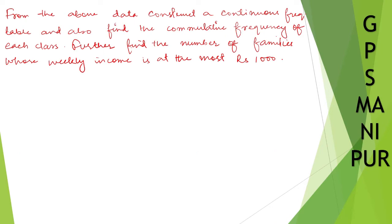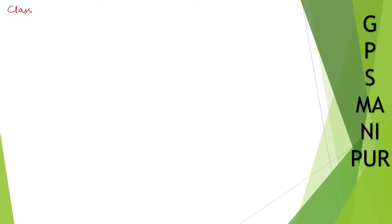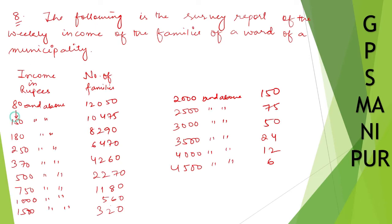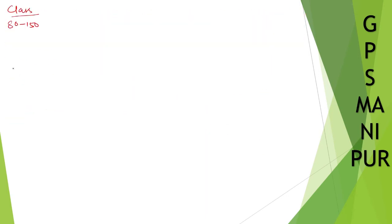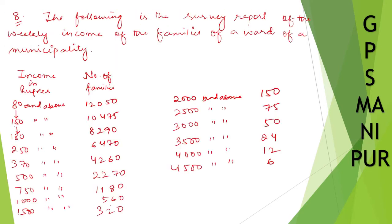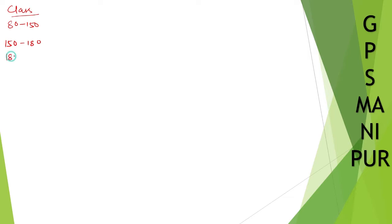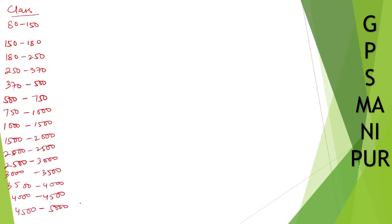In order to make a continuous frequency table, we write down the class intervals. The classes are: 80 to 150, 150 to 180, 180 to 250, 250 to 370, 370 to 480, and the last one is 4500 and above — I have taken up to 5000. The gap between classes is 500, so I have taken the gap of 500.